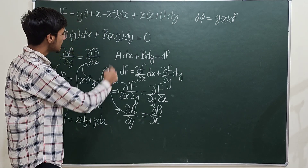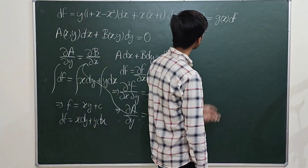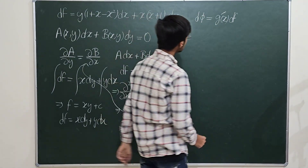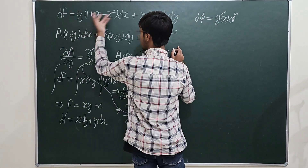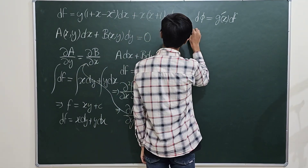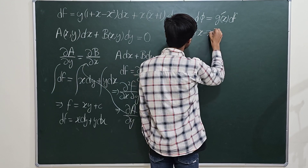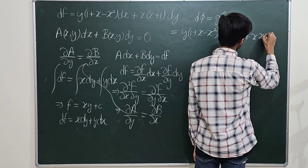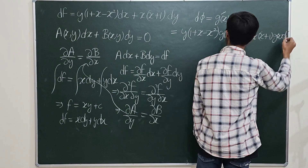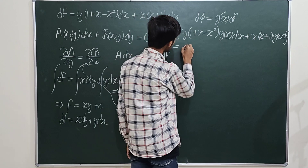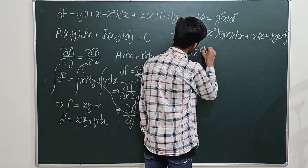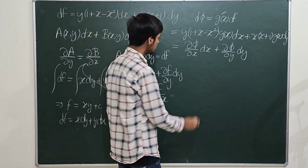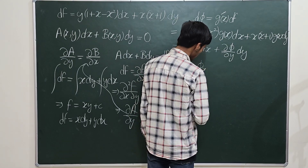To find the integrating factor, consider a new differential dΦ equal to g(x) times the inexact differential df. You need to find g(x) such that multiplying it into the differential makes it exact. You can verify exactness using the cross-partial property.